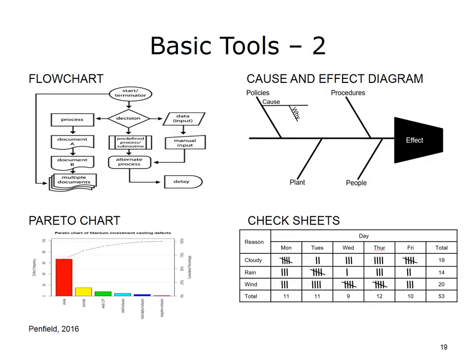The Pareto chart is based on work by Vilfredo Pareto, an Italian economist in the 1880s, who observed that 80% of the wealth in Italy was held by 20% of the population. This Pareto principle was later applied to other applications, finding that 80% of the variation of any characteristic is caused by only 20% of the possible variables. A Pareto chart is a display of the frequency of occurrences that helps to show the vital few contributors to a problem so that management can concentrate resources on correcting these major contributors.